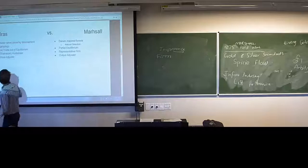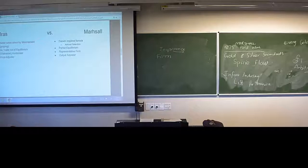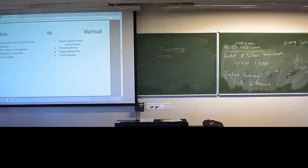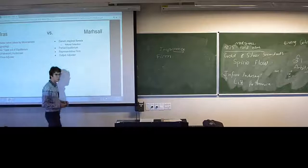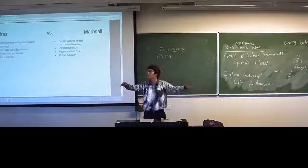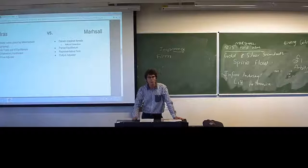Marshall is an output adjuster while Walras is a price adjuster. The process by which the Walrasian auctioneer happens is called the tatonnement process. The auctioneer announces the price and then people go around trying to inquire what exactly was the going rate. Walras called this tatonnement, which is the French translation directly as 'groping' — quite a nice idea of people trying to walk around, finding each other and discussing the various prices at which they are willing to make exchanges.